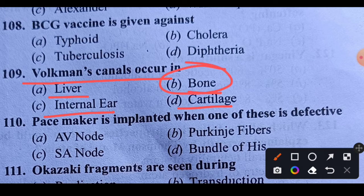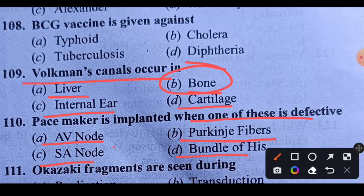Question 110: Pacemaker is implanted when which structure is defective? Where do we implant an artificial pacemaker? Options: AV node, Purkinje fibers, SA node, or bundle of His. Pacemaker is implanted when the SA node is defective — we then implant the artificial pacemaker.